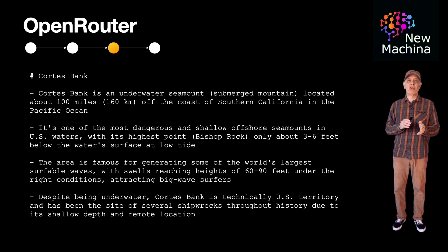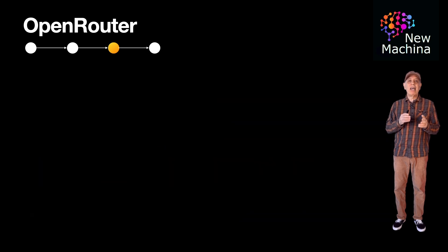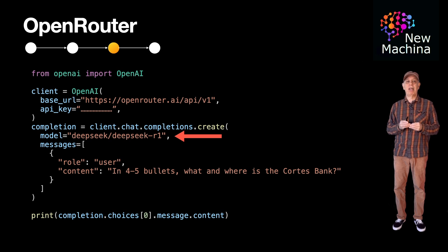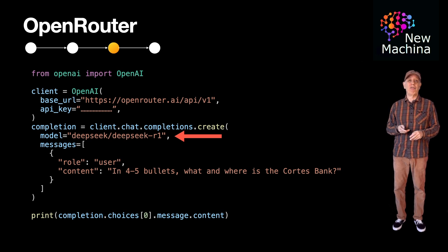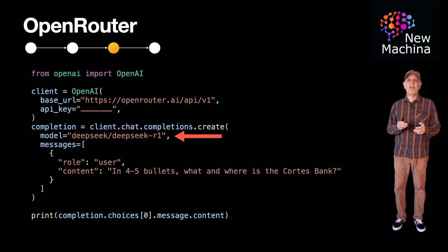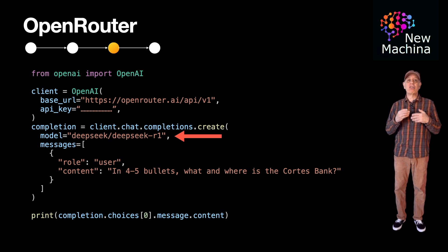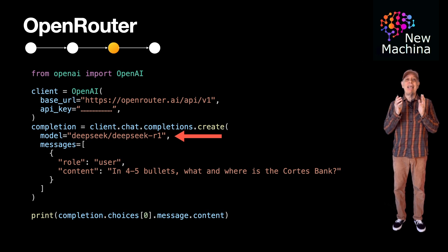Now let's look at the second version of this Python code example. We will integrate with DeepSeek R1, and you'll notice the Python code is very similar to the first version except the model name is different. In this version, the model name is deepseek/deepseek-r1. Now you see why swapping out LLMs is literally a 30-second effort. Running this second version of the script, the request goes to OpenRouter, and behind the scenes OpenRouter directs the prompt to an instance of the DeepSeek R1 LLM. The implementation details of how OpenRouter handles this are proprietary, but as the developer using this service, you should know DeepSeek R1 is handling the prompt.